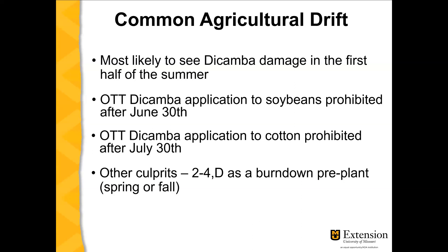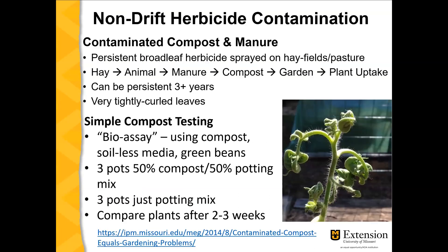Besides dicamba, 2,4-D as a burndown pre-plant could happen at any time of year, or as an over-the-top application on genetically resistant crops. Unfortunately, both of these herbicides can drift physically — that lateral drift of the droplets — but they can also volatilize, turning into a gaseous form and moving off-site.